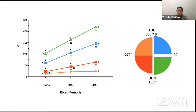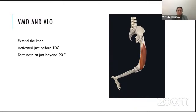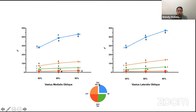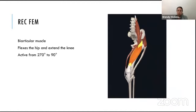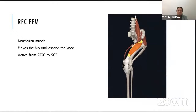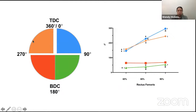The quads — VMO and VLO — work to extend the knee. They're activated just before top dead center and terminate just beyond 90 degrees. That's the quadrant they work in most — top dead center to 90 degrees — and that's where significant changes occurred as intensity increased. Rectus femoris is also a biarticular muscle: it flexes the hip and extends the knee. It's active from 270 to 90 degrees, with the hip flexor pulling the leg up and over top dead center, then working to straighten the knee as you start pushing down.